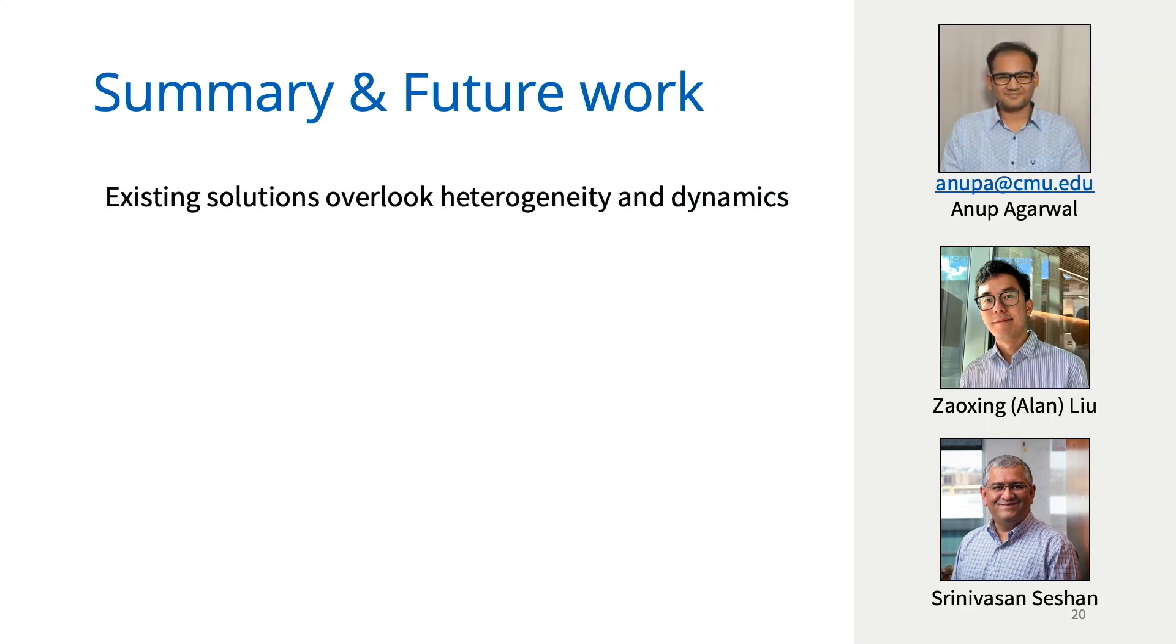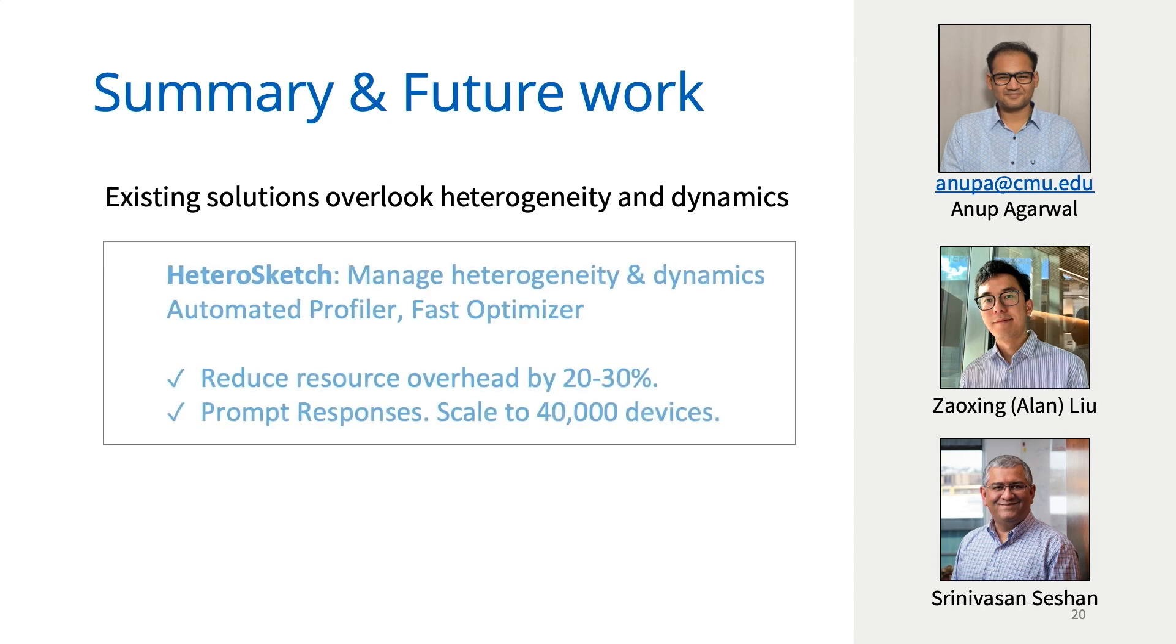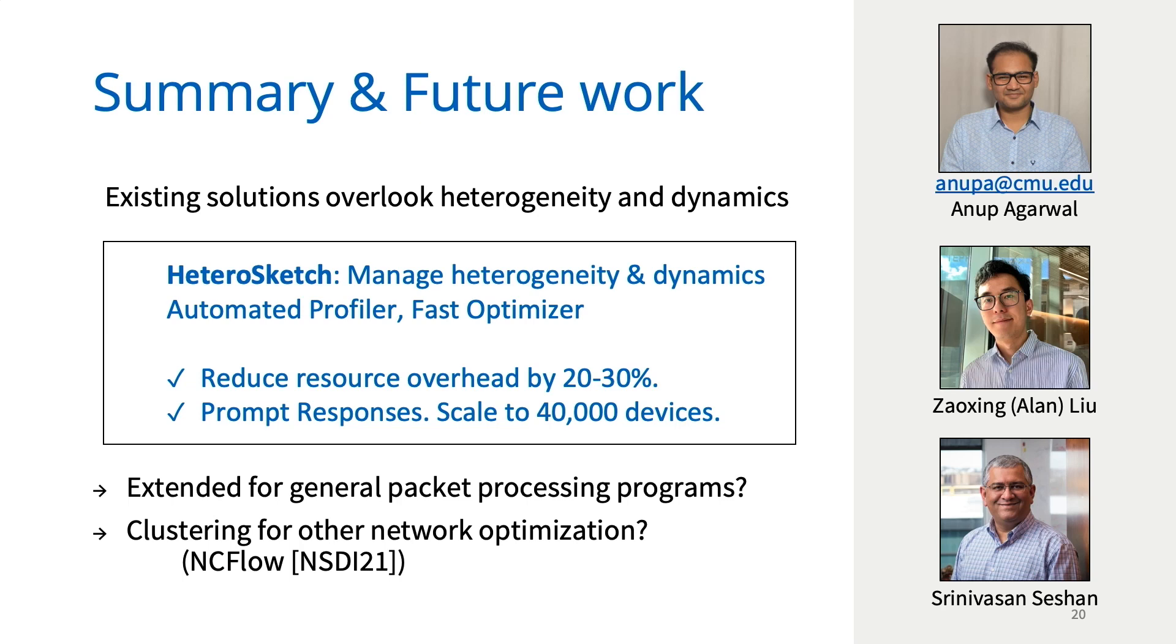In conclusion, existing works overlook heterogeneity and dynamics. We build HeteroSketch as a general way to manage heterogeneity and dynamics through a combination of automated profiling and a clustering heuristic. As a consequence, we are able to reduce resource overheads by 20% to 30% and promptly respond to network dynamics. We believe that our profiling plus optimization approach can be applied to other packet processing programs. Inherently, any program that you're going to deploy on the data plane is meant to be simple so that it can keep up with increasing line rates. This simplicity makes them amenable to automated profiling. We also believe our clustering heuristic can be applied to other network optimization problems. Indeed, some of the recent works have employed a similar approach in other contexts.